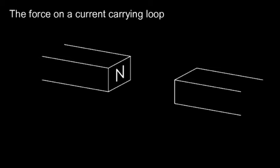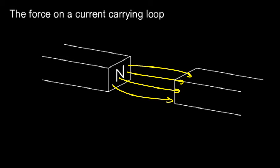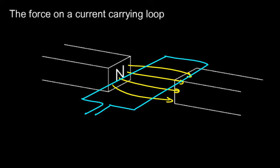Now let's take that same concept and apply it to a loop of wire. The loop doesn't have to be round — to make it simpler I'm going to draw it square. First let's draw in the field lines representing the magnetic field pointing from north to south. Now let's draw a loop of wire in three-dimensional perspective, with electric current entering one end and coming out the other, flowing around the loop in this direction.